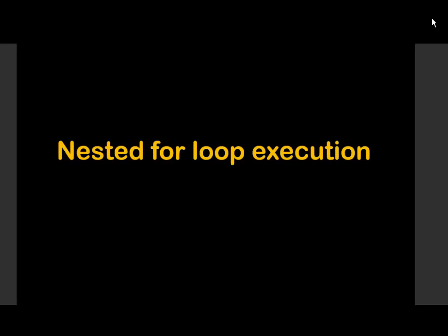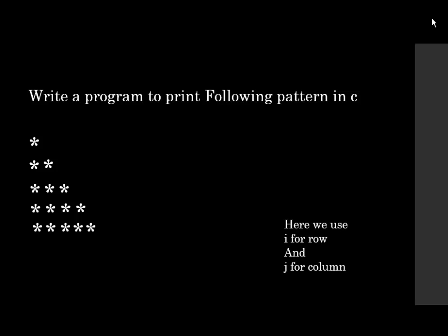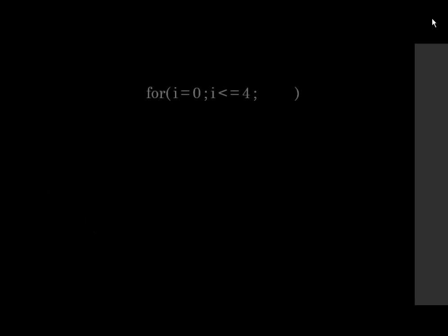Hello friends, today we learn nested for loop in C programming. We learn here how to print a different pattern in C programming. We use I for row and J for column. Let's understand the nested for loop execution.